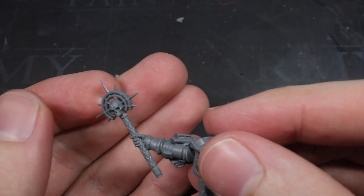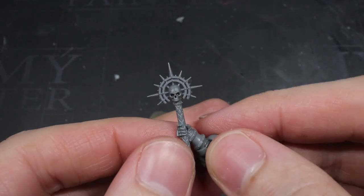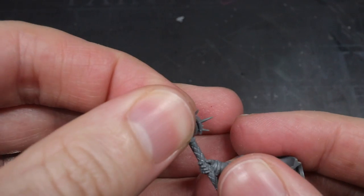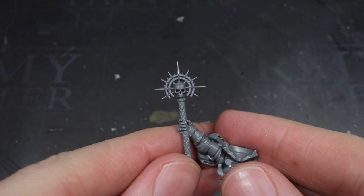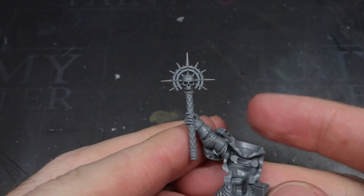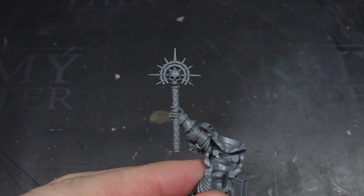Now with this conversion, while I was planning on some chapter specific details, many of the conversions that I would be applying could easily be employed on your own masters of sanctity, with this simple modification being one of them. Simply having a more ornate symbol of office will provide both some recognition as well as some degree of variation.